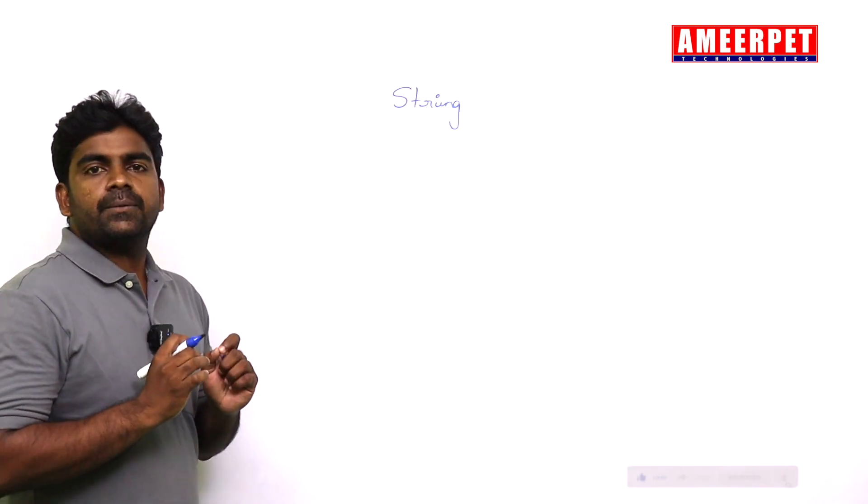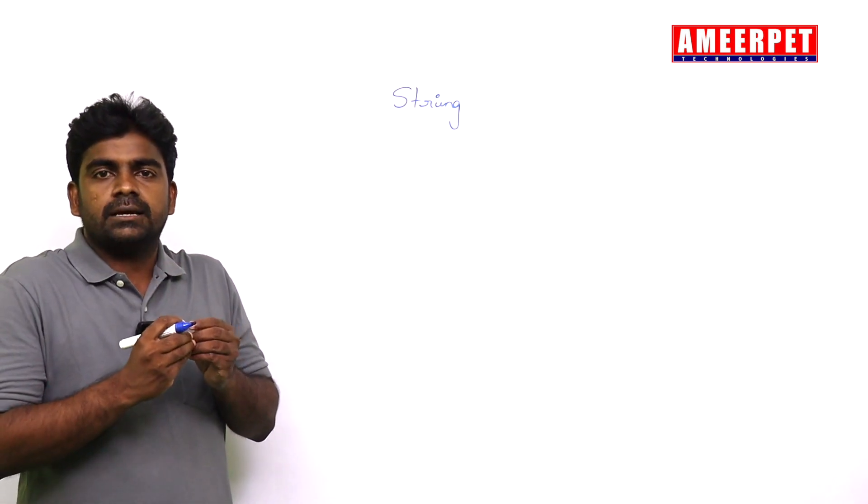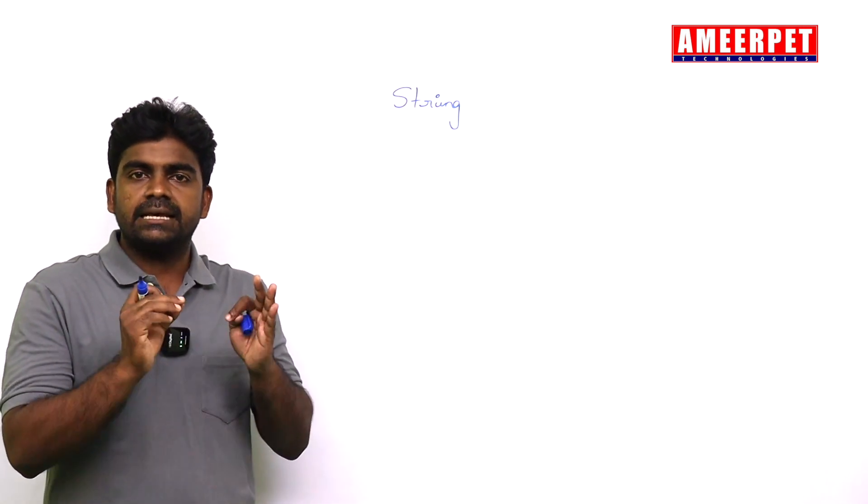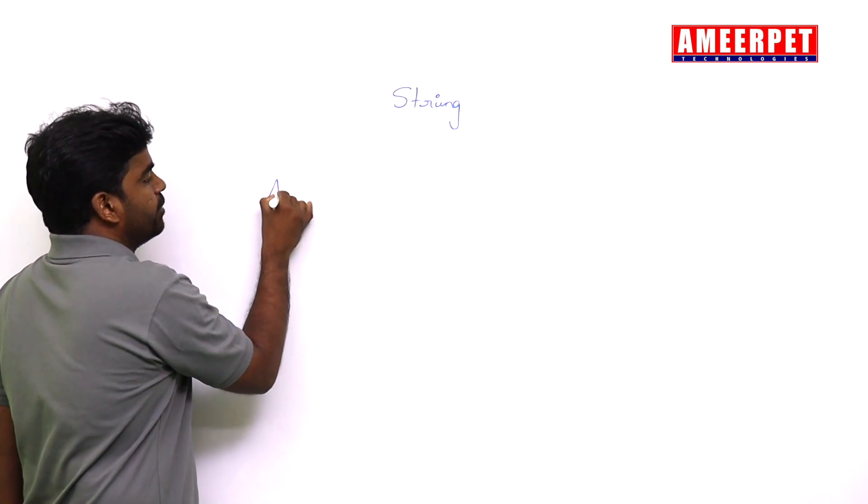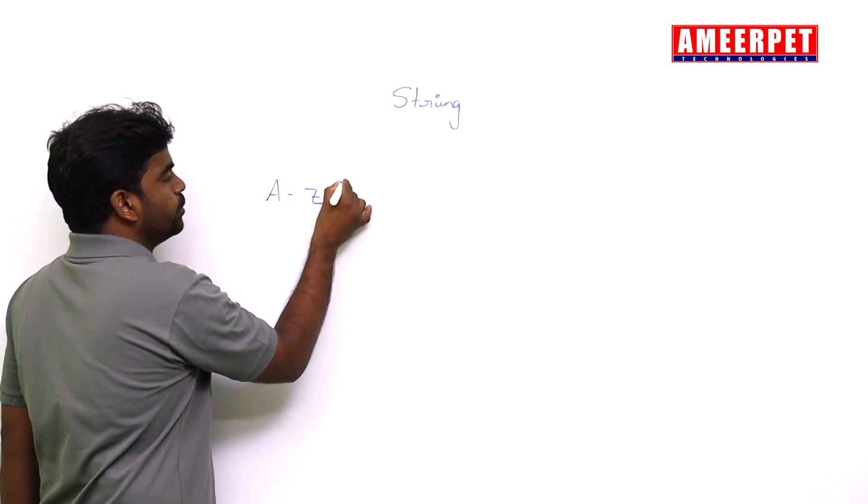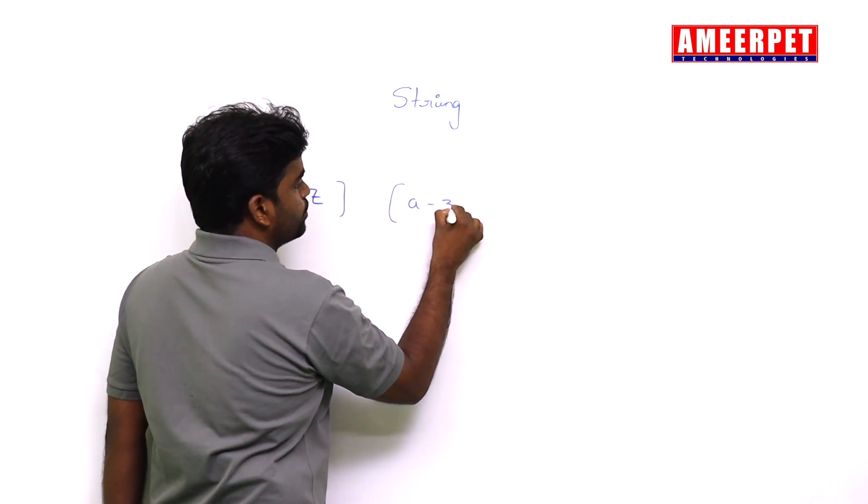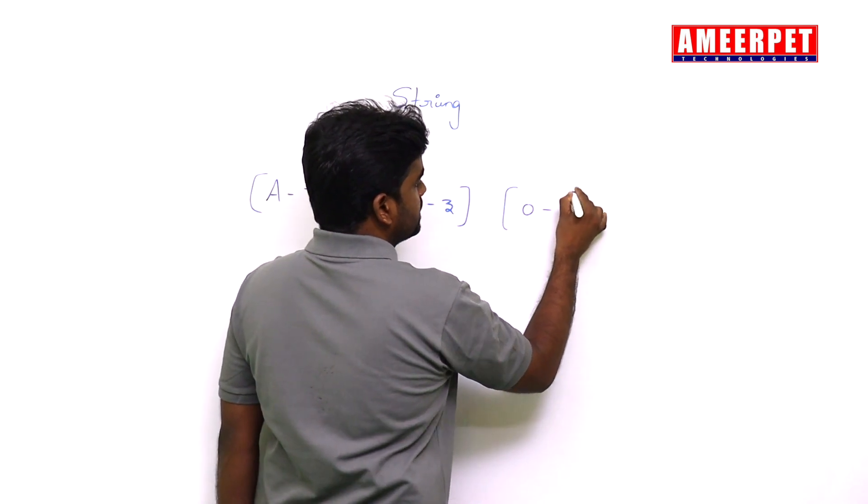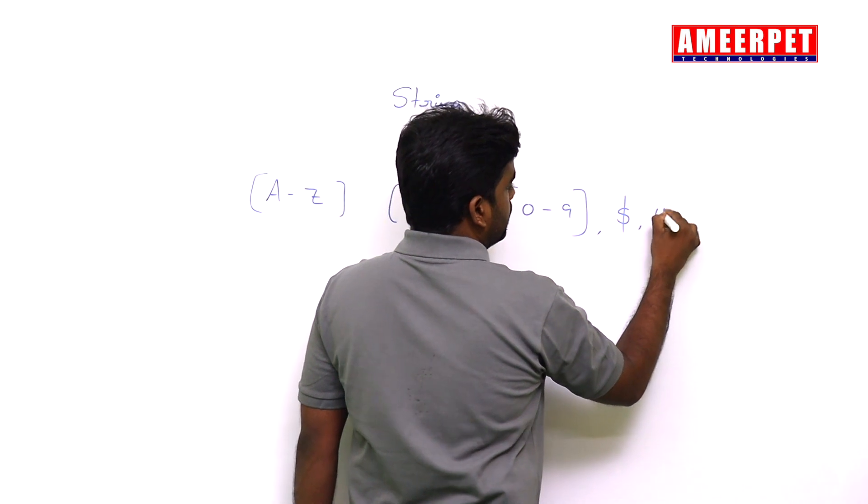The characters means what? It can be an alphabet, it can be a digit, or it can be a symbol. String can contain alphabets like capital A to capital Z, lowercase alphabets small a to small z, it can have digits zero to nine, and symbols also like dollar, hash, all these things.